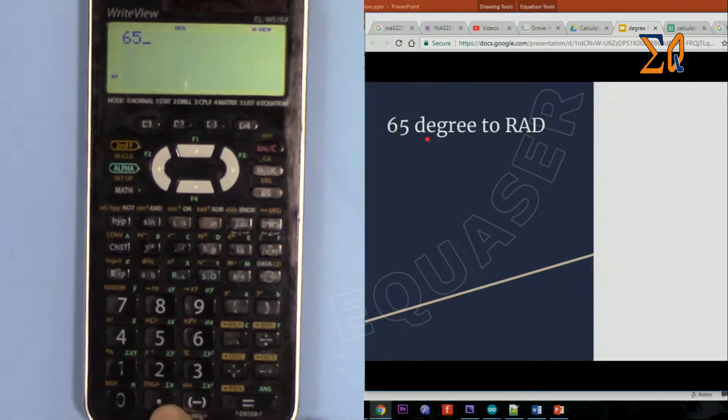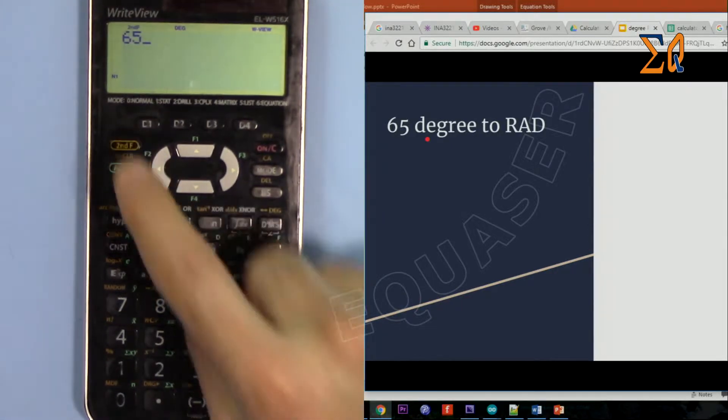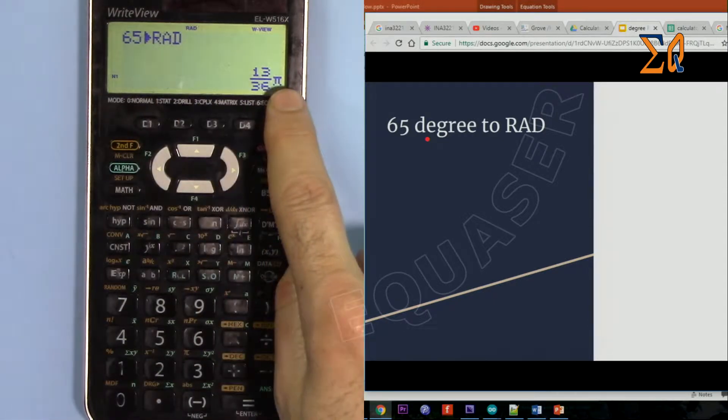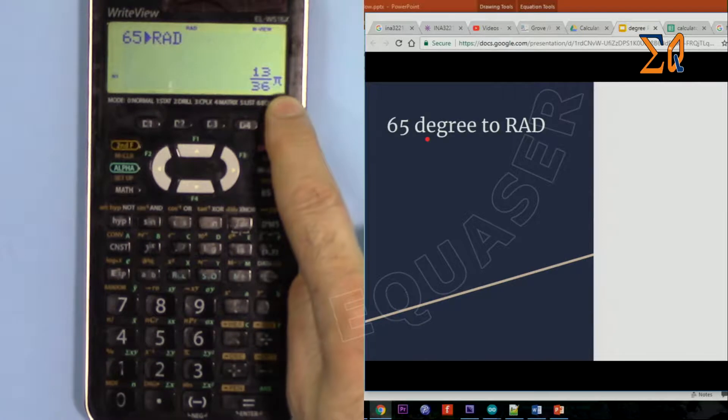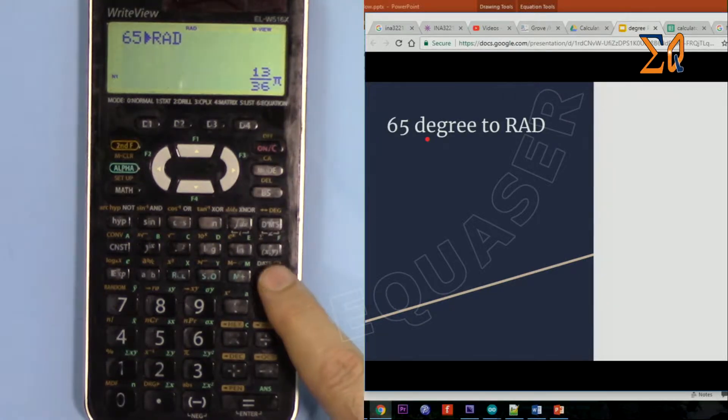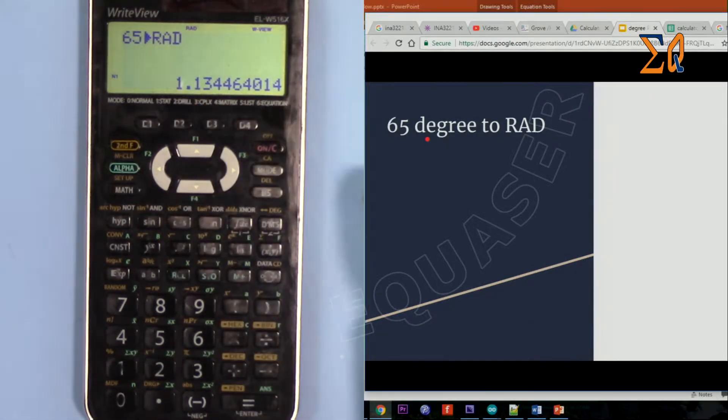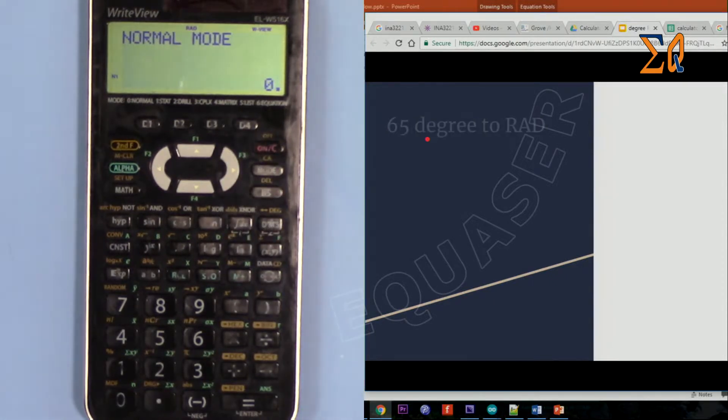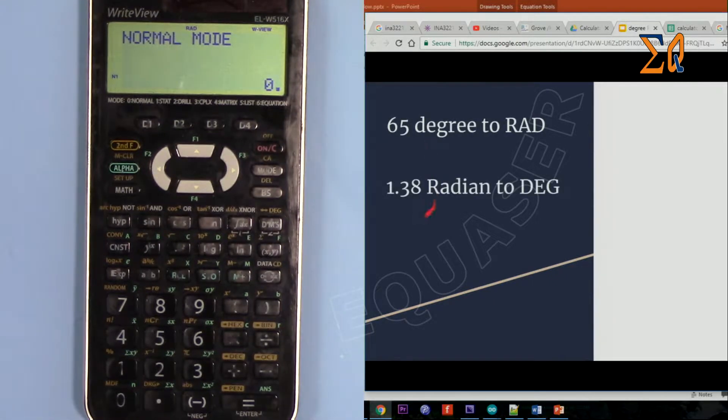Now this is converting it to radian, so 13 pi over 36. If you want to see it in actual decimal just press this, so that's 1.13.